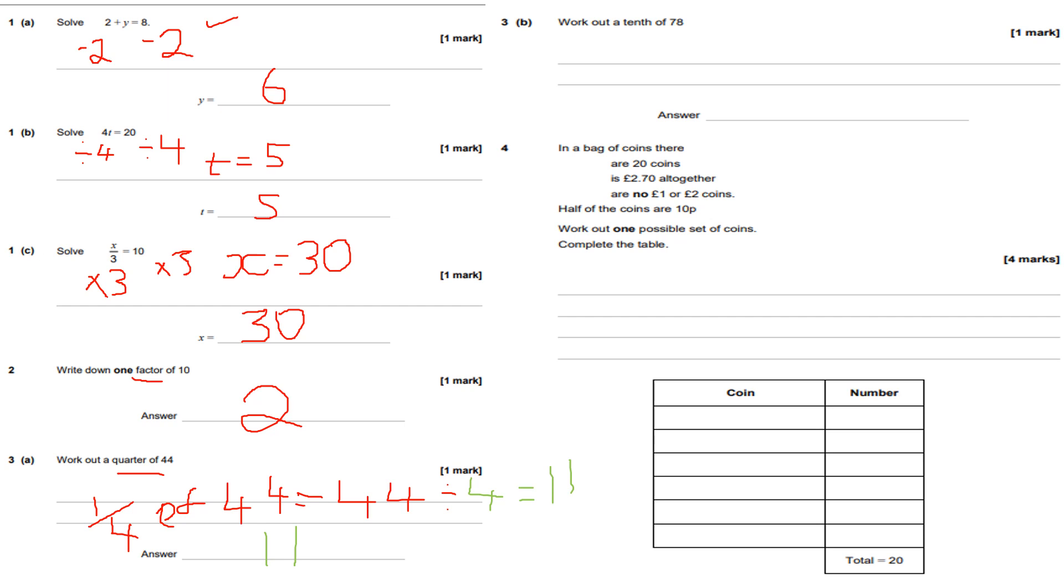For part b, work out one tenth of 78. One tenth of 78 means I'm going to do 78 divided by 10. One tenth of an amount means I divide it by 10. These are fractions of an amount: you divide by the denominator and then multiply by the numerator. But if the numerator is 1, just divide your number by the denominator. 78 divided by 10, hop the decimal point in, and I get 7.8. If you're not too sure, you've got the number 78.0. Dividing by 10, the decimal point moves one place to the left, and I get 7.8.